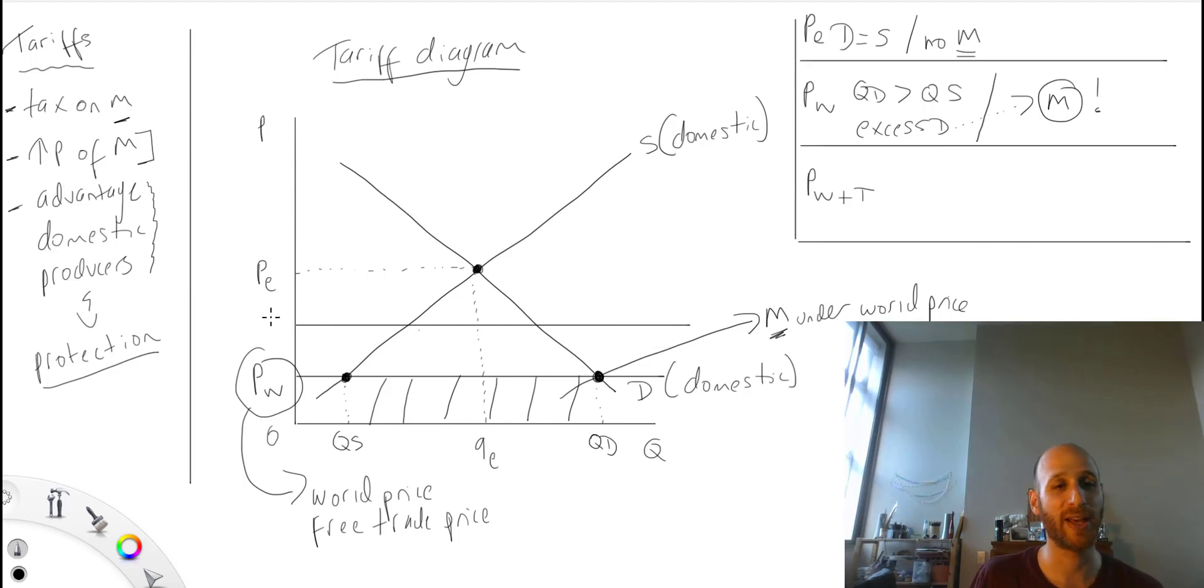So here the government says, okay, so we've got the world price plus the tariff. Here is the price at which the government is setting, which is the world price plus the tax, the tariff.